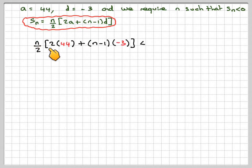We get N over 2, 2 times 44 plus N minus 1 times the common difference minus 3 is less than 0. So we've got N over 2, 88 minus 3N plus 3 is less than 0.